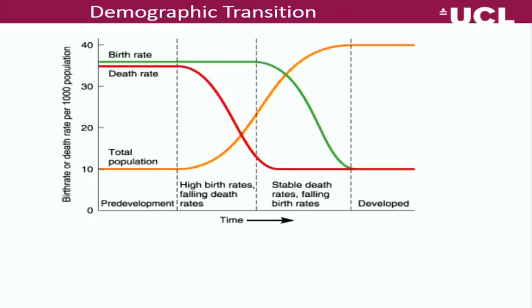What is the demographic transition? Essentially it describes how a population with high birth rates and high death rates ends up having low birth rates and low death rates, and in the process becomes much larger. Before the transition starts, population is fairly stable, because on average only two children survive through adulthood to have children, and only two of their children survive to have children, and so on — so the population stays pretty steady.